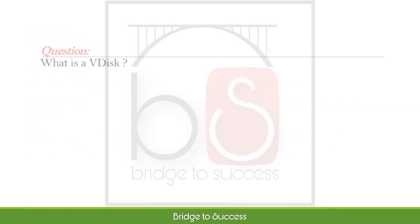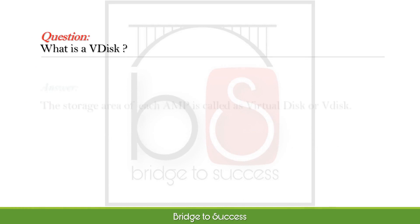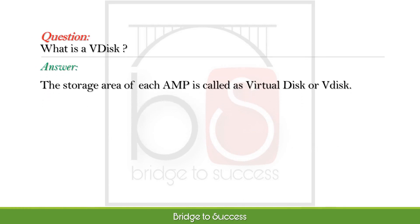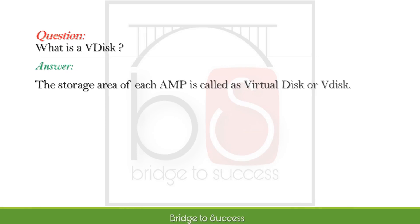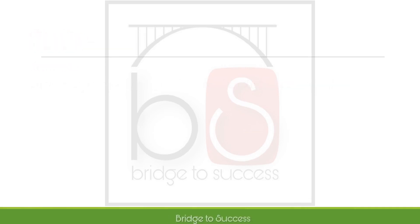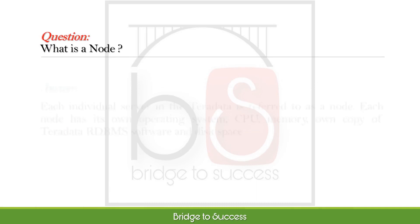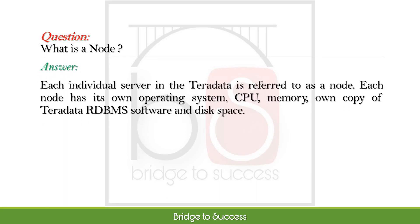What is a V-disk? The storage area of each AMP is called a Virtual Disk or V-disk. What is a node? Each individual server in Teradata is referred to as a node. Each node has its own operating system, CPU, memory, own copy of Teradata RDBMS software, and disk space.